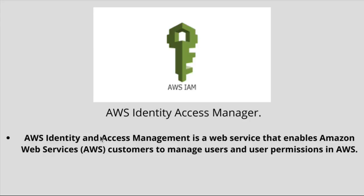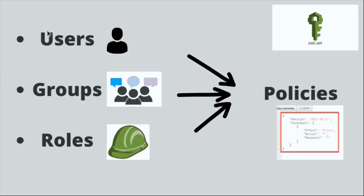According to the definition, AWS Identity and Access Management is a web service that enables Amazon Web Services customers to manage users and user permissions in AWS. What this means is you can set up users, groups and roles and attach policies to them to give permissions to each of them.